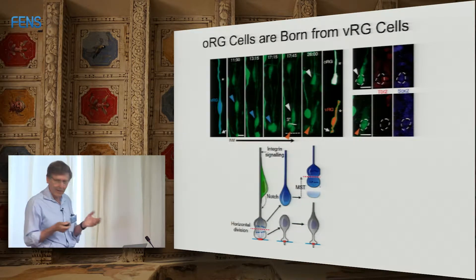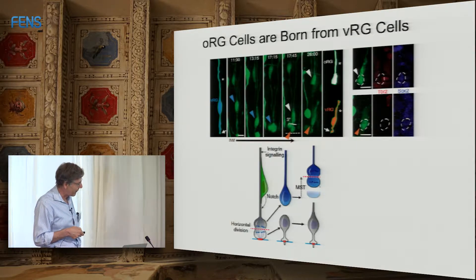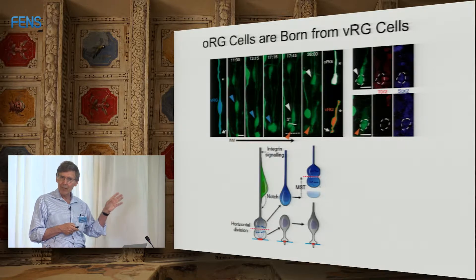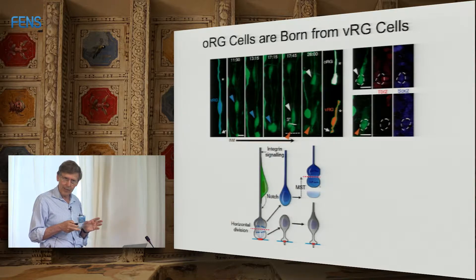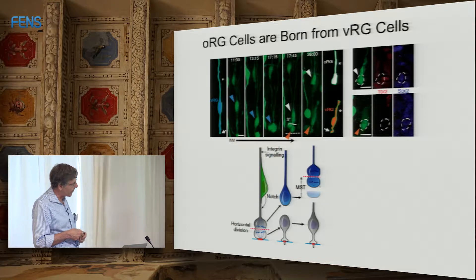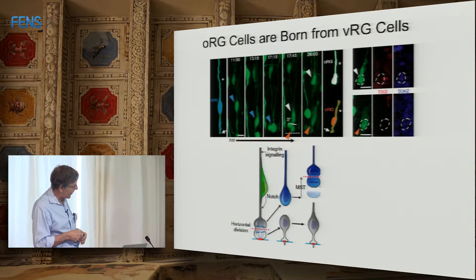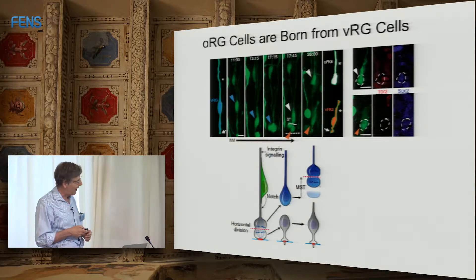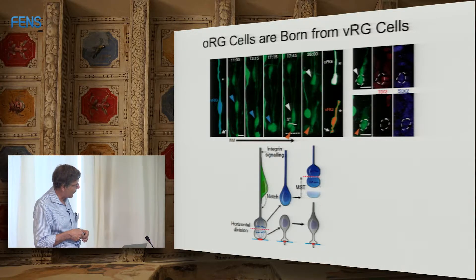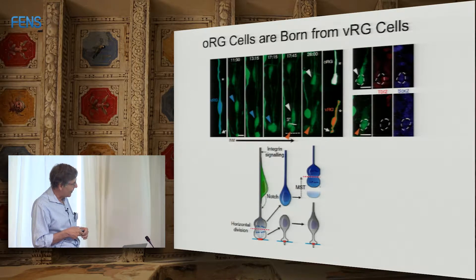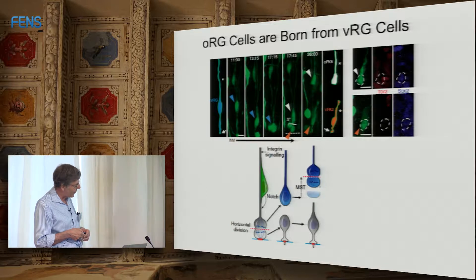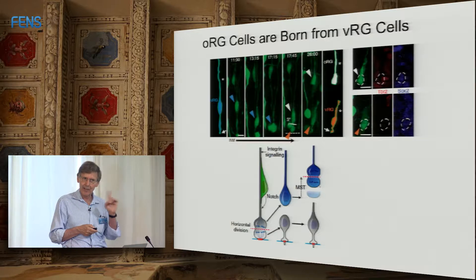Where do ORG cells come from? They come from ventricular radial glia when those cells divide with a horizontal rather than vertical cleavage. In the mouse they almost always divide vertically, but in humans, primates, and ferrets around the halfway point of neurogenesis there's a big increase in horizontal cleavages. In a horizontal cleavage, the basal cell inherits the fiber and moves away; at its next division it jumps and divides, defining it as an outer radial glial cell. The ventricular cell that's left behind loses its fiber and must regrow it.